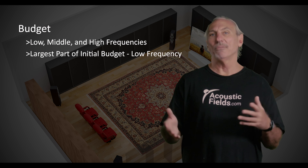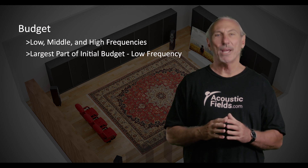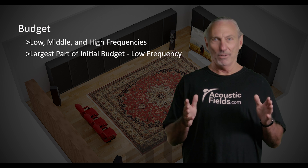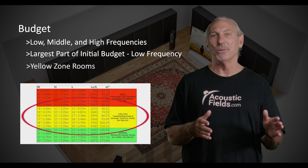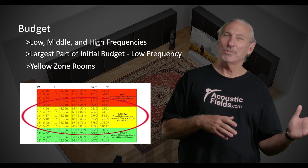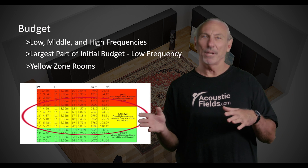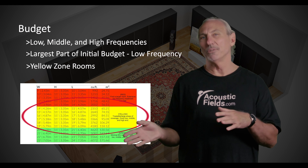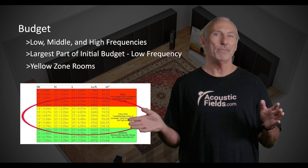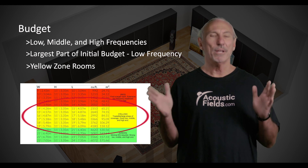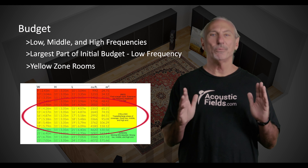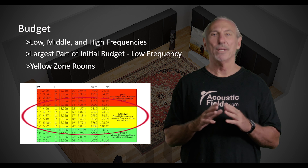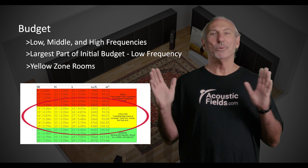I went back through our sales and design data for the last three years and looked at costs on average size rooms. We're going to focus on rooms in our yellow zone, because the red zone is too small to give a really good idea, and the green zone is a little too large — only about 10% of our clients have rooms in that area. Most of our rooms fall in the yellow zone on our red, yellow, and green chart.